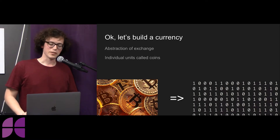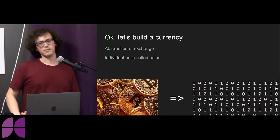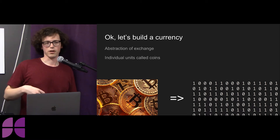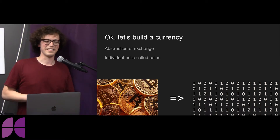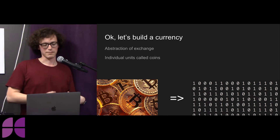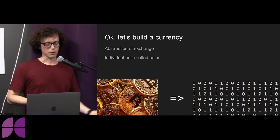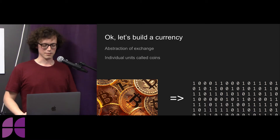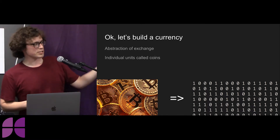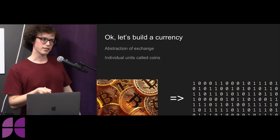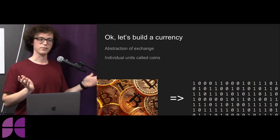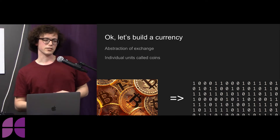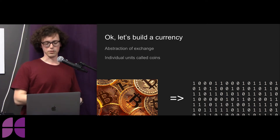So let's build a currency. A basic definition is that a currency is an abstraction of exchange. If I want to trade a cup of coffee for your shoes, instead of me having a coffee and you having the shoes at the same moment in time and space, we could just trade this abstraction — we'll call them coins. In our cryptocurrency we just have zeros and ones, bytes floating around. The task is taking these bytes and building a currency that mirrors our typical intuitions, so it looks less like zeros and ones and more like gold coins.